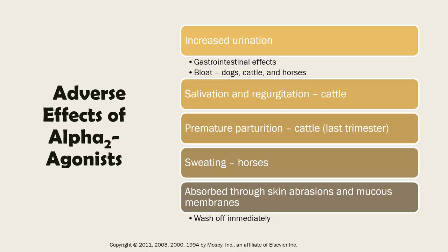Alpha-2 agonists can cause increased urination. In the GIT, bloat has been reported in dogs, cattle, and horses, although this is not common. For cattle, they can get salivation and regurgitation, also not common. In cattle, particularly in pregnant animals — if you have a cow in the last trimester — giving an alpha-2 agonist might induce premature labor or parturition. For horses, they can sweat as an adverse effect.